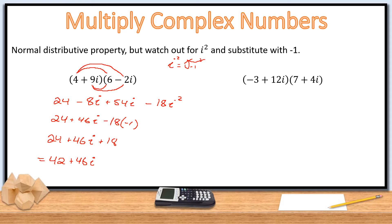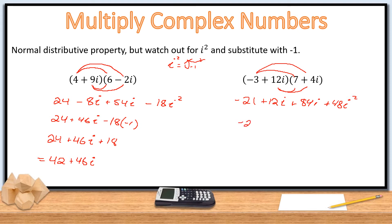For the second multiplication example, (minus 3 plus 12i)(7 minus 4i): minus 3×7 is minus 21, minus 3×(minus 4i) is plus 12i, 12i×7 is plus 84i, and 12i×(minus 4i) is plus 48i². Since i² is minus 1, that's minus 48. So minus 48 minus 21 is minus 69, and 12 plus 84 is 96i. Final answer: minus 69 plus 96i.